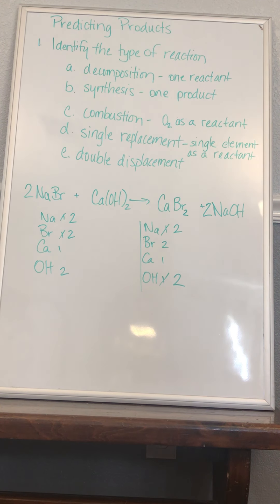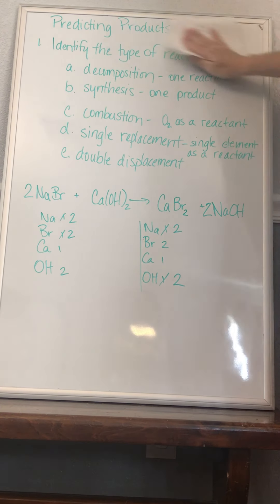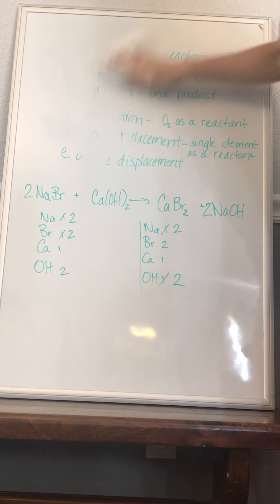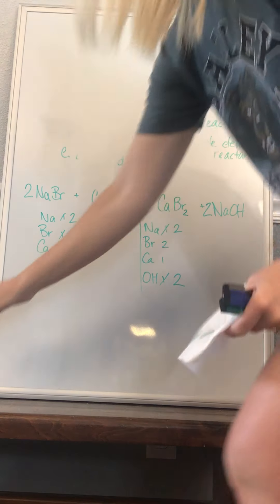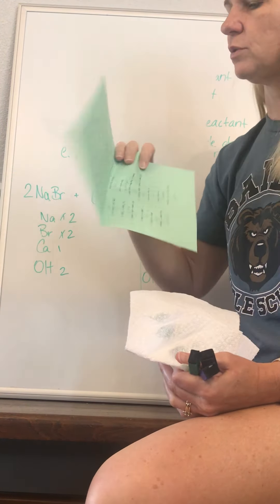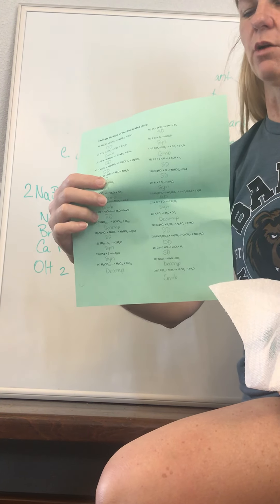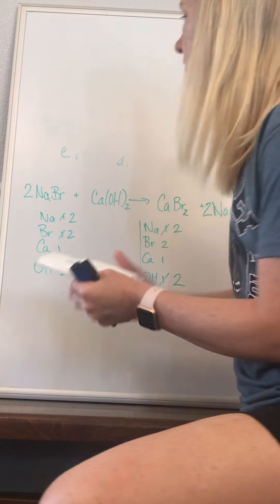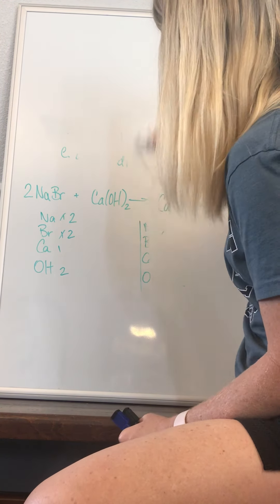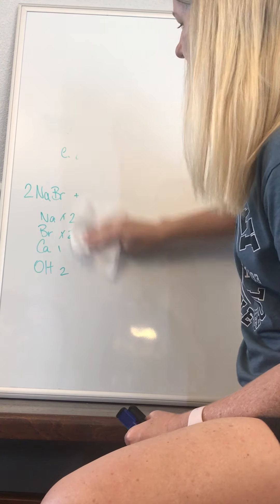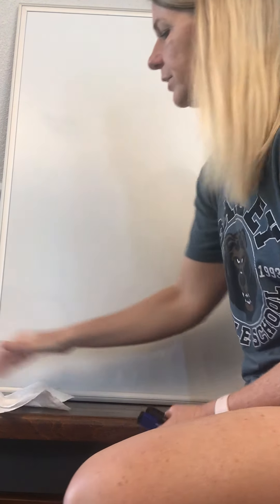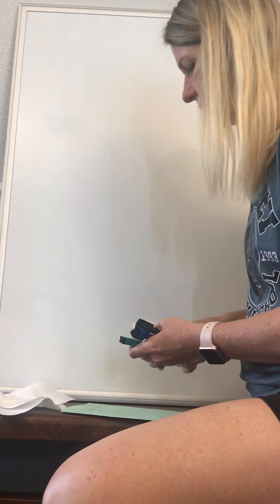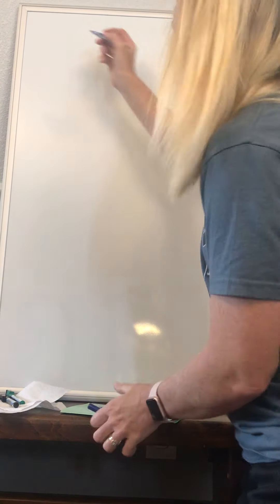Now we're going to move to the predicting products worksheet. The worksheet had two sides — the easy side where we identified the type of reaction, then the types of chemical reactions worksheet, and now we're on predicting products. I'm going to go through that with you to show you how it works so you have a better idea of how to predict products later when you're doing it by yourself.